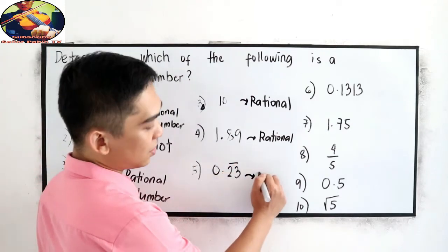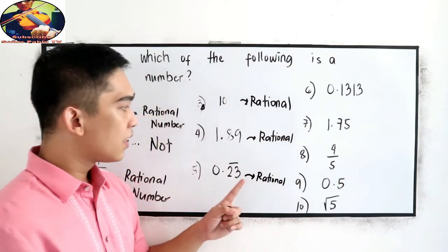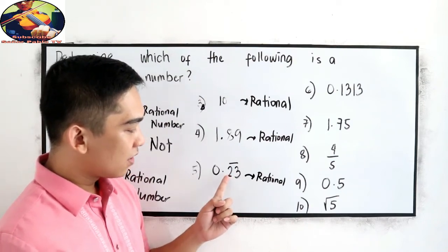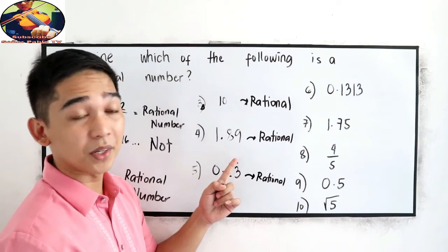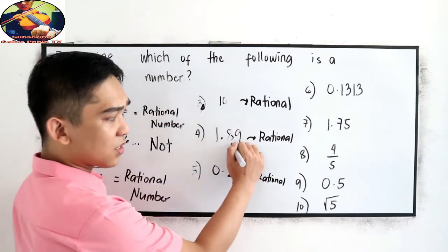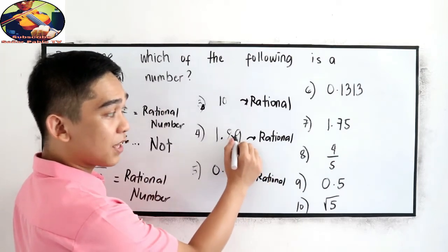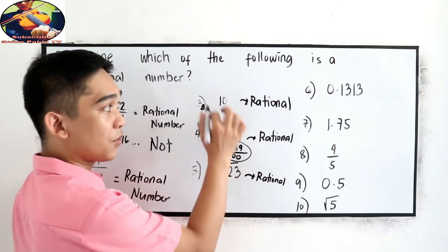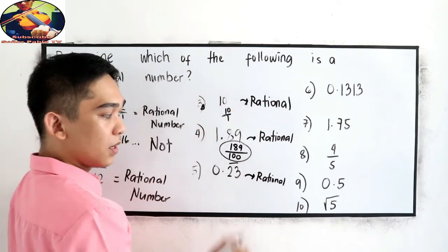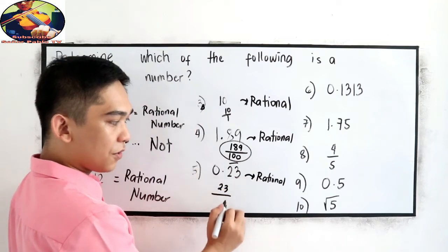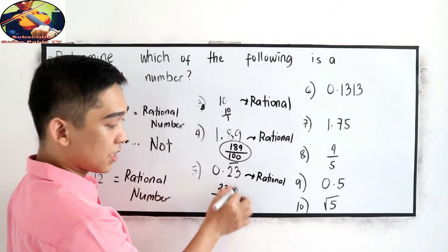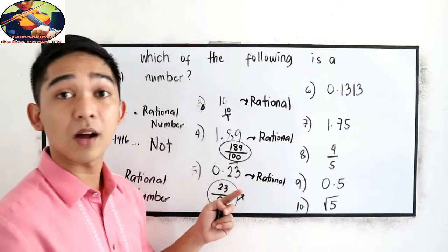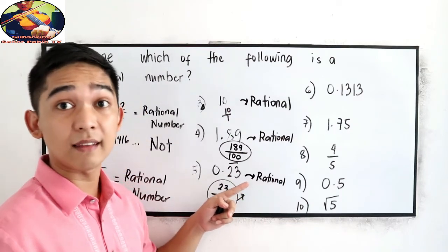Later on we're going to write how to simplify a decimal with a bar on top. For number 4, 1.89 can be written as 189 over 100 — two decimal places, so two zeros. For number 3b, the rational form is 10 over 1, and for number 5, the rational form is 23 over 99. We'll tackle how to simplify this kind of decimal in our next videos on simplifying terminating and non-repeating decimals.